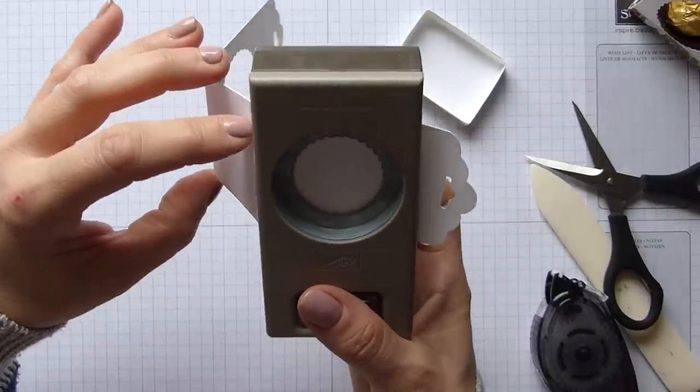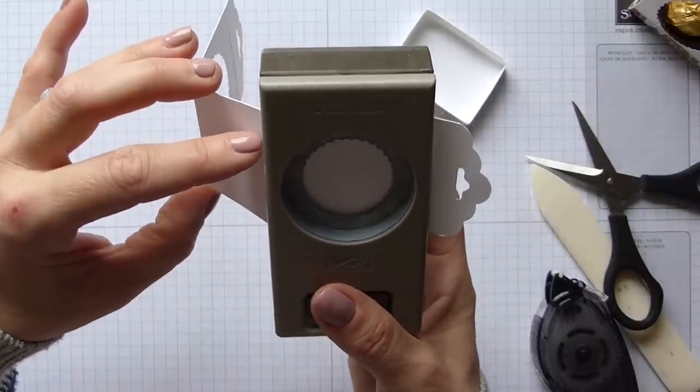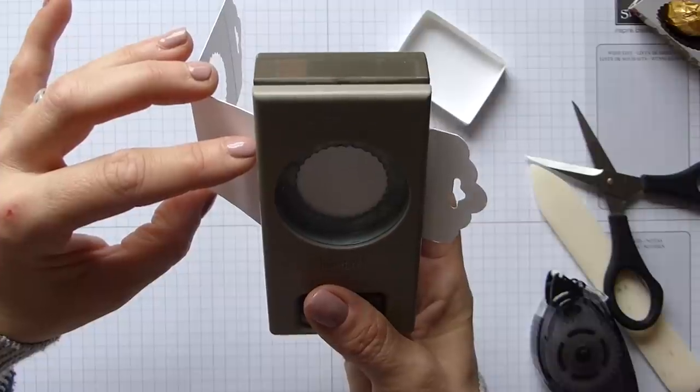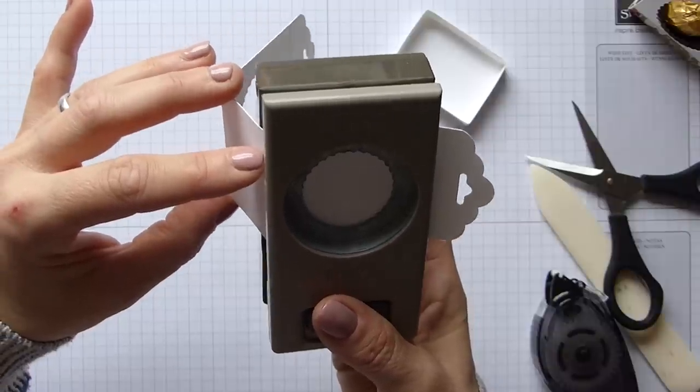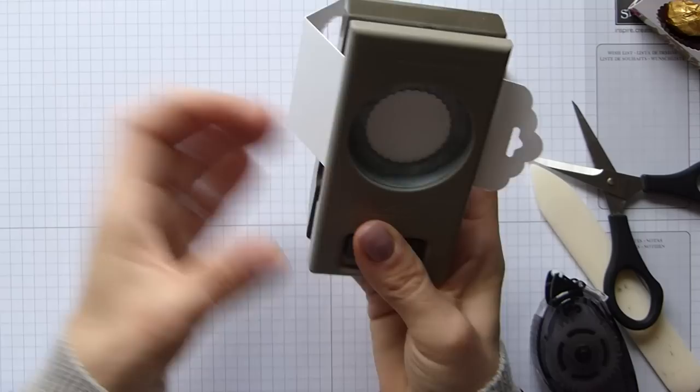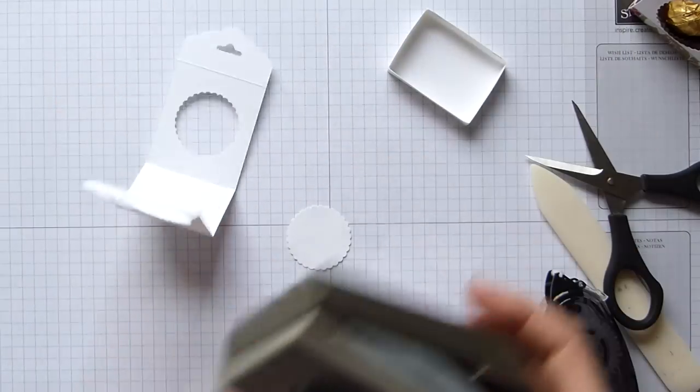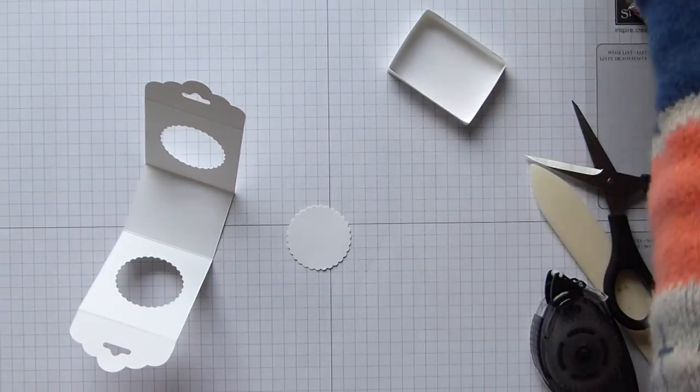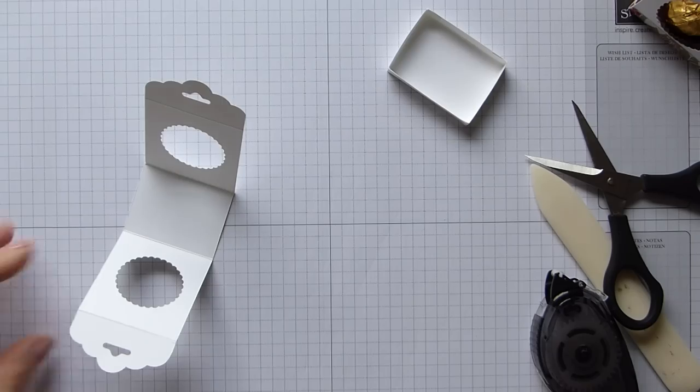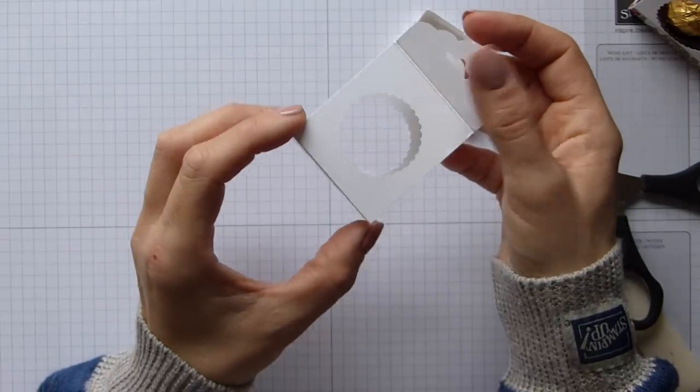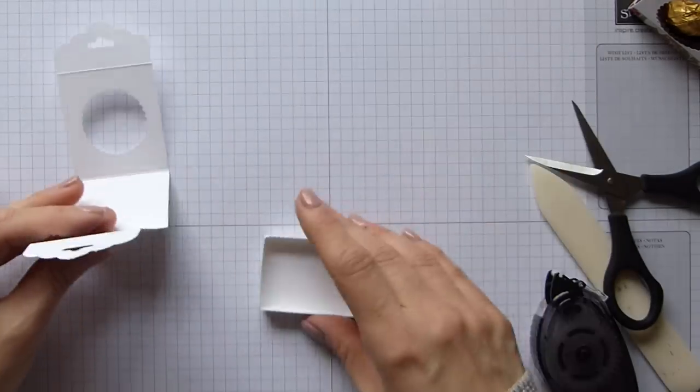And then we're going to do exactly the same with the other side. So again, put it in, make sure it's lined up. And I'm going with that one. Whoops. Okay, so my two circles are punched out. We can now decorate everything up.